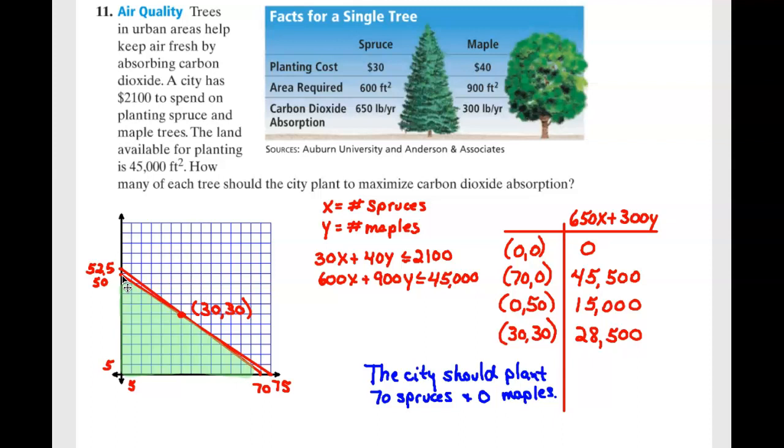That would give me a vertice at the y-intercept, at the point of intersection, and at the x-intercept. So I have three vertices plus (0,0). Well, we know we're not going to plant zero trees. But it would act as a vertice as I was just explaining the domain constraints.